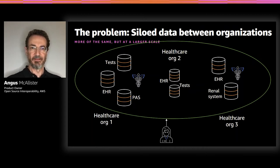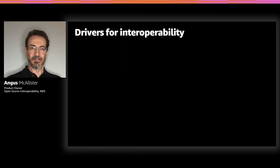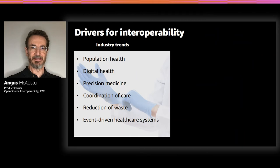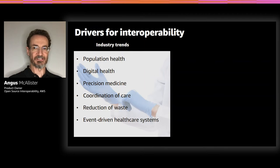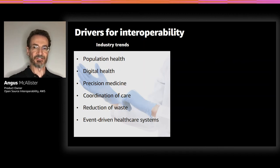At a higher level, there are a number of drivers accelerating the need for interoperability. These fall into different categories. The first is a set of trends — and interoperability is a necessary condition for these, though not a sufficient one. The first trend is population health: the ability for health authorities to capture and forecast the state of countries', regions', or cities' health. This has grown in importance, especially during COVID-19, and relies on aggregating data regularly from a wide variety of sources that are structurally and semantically interoperable.